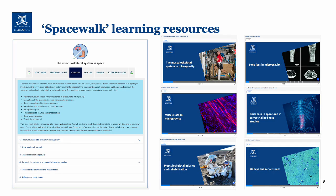The learning resources are divided into six categories: the musculoskeletal system in microgravity, bone loss in microgravity, muscle loss in microgravity, back pain in space and in terrestrial bed rest studies, musculoskeletal injuries and rehabilitation, and kidneys and renal stones.